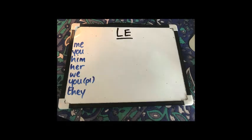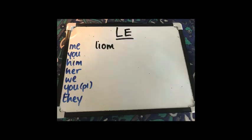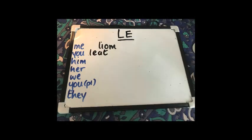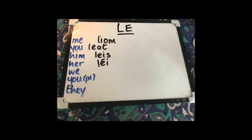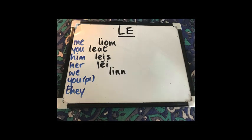Now we'll move on to 'le', which means 'with'. So: with me — liom, with you — leat, leat, with him — leis, leis, with her — léi, léi, with us — linn, linn.